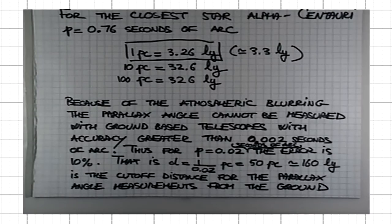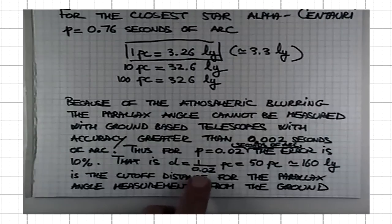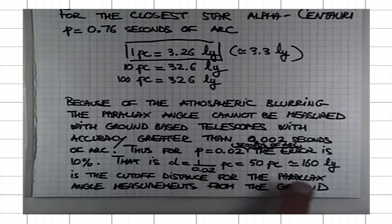From ground-based observatories, we can measure the distances with sufficient accuracy to the stars that are not more distant than 160 light years.